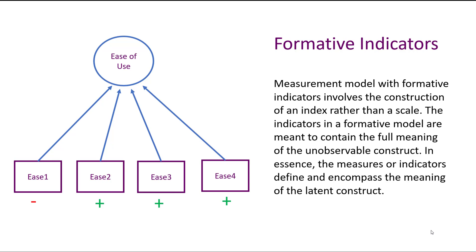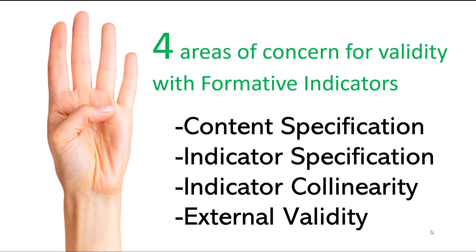With formative indicators, the traditional validity tests — reliability, convergent validity, and discriminant validity — really fall apart. If one indicator is going in the opposite direction of the others, your reliability will be problematic, convergent validity won't converge, and unidimensionality becomes an issue. Those traditional tests appropriate for reflective indicators are genuinely problematic when applied to formative indicators, so formative indicators have their own assessment criteria.